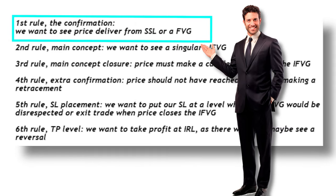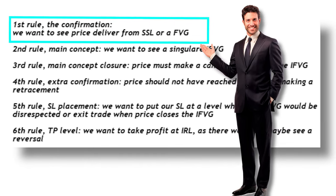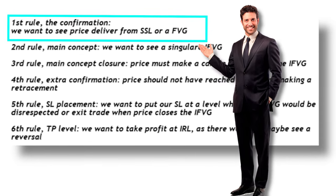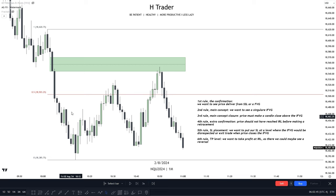There's one last step, and without it the trading strategy we just made doesn't even matter. But before that, I just want to show you an example of a trading strategy. This strategy is going to follow the recipe we just discussed in steps one, two, and three. The first rule should be a confirmation — we want to see price deliver from sell side liquidity or a fair value gap. In this example, we can see price reached up into a premium fair value gap and then started to move lower from there.